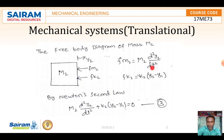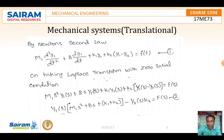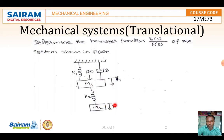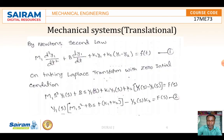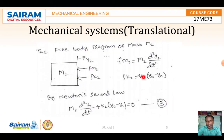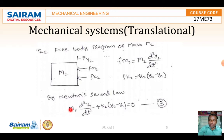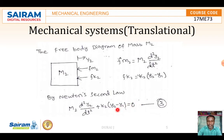For M2, F_M2 = M2·(d²y2/dt²), and F_K2 = K2·(y2 - y1), since we are taking M2 as the reference. The equation becomes: M2·(d²y2/dt²) + K2·(y2 - y1) = 0.